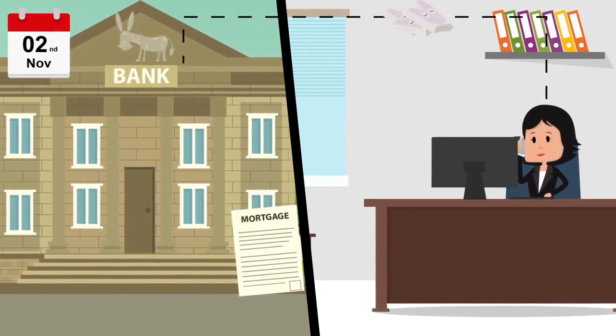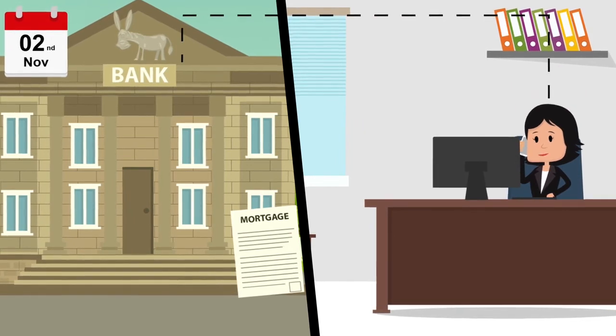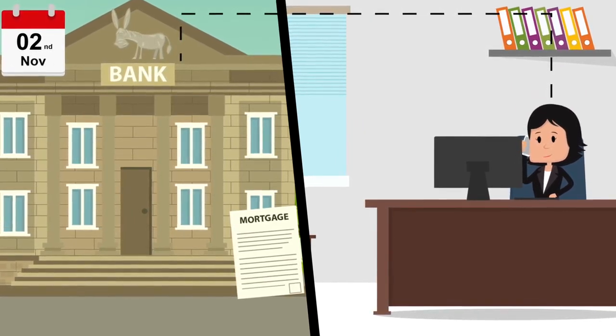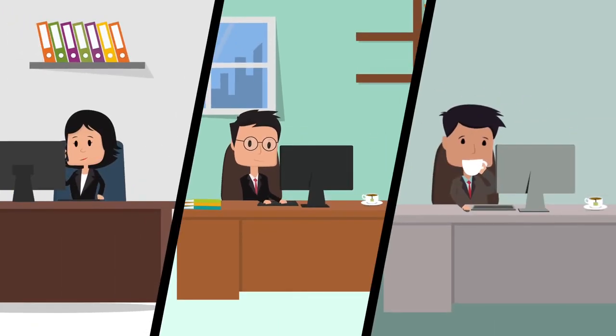On the day of completion, the money is sent from the buyer's conveyancer at the bottom of the chain to the seller's conveyancer and when it arrives safely, the seller's conveyancer rings the estate agent to release the keys. The buyer can now collect the keys and move into their new home.